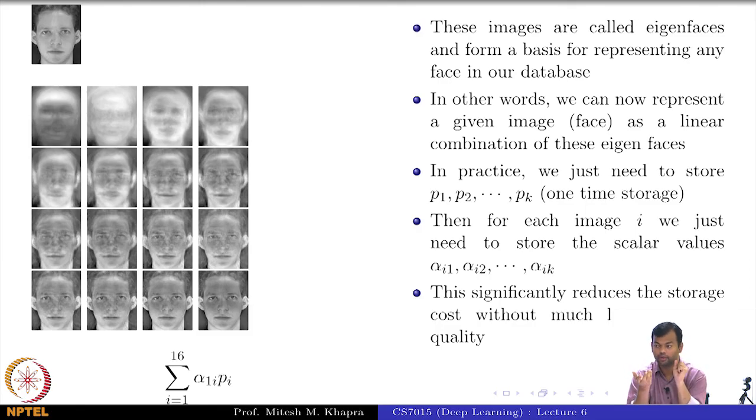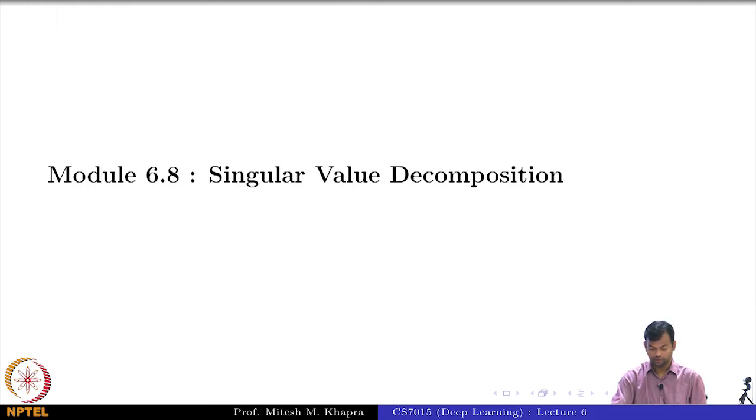Because PCA has helped you to throw away these dimensions, maybe there is some element which is causing the image to look slightly different, but that is not the important information. That would get discarded off and only the relevant information would stay. So multiple images of the same person which were far in the original space would come closer in the new space. This is what compression helps you do. You want to learn the important characteristics of your original data and that is what PCA allows you to do.